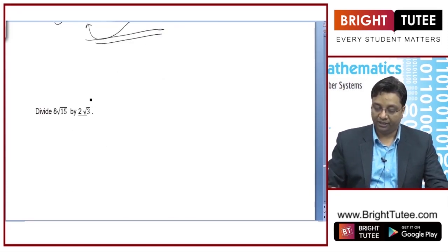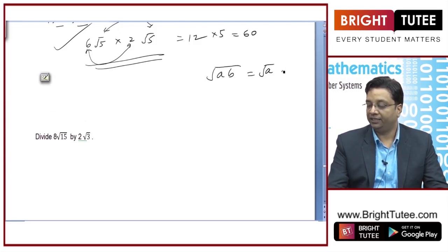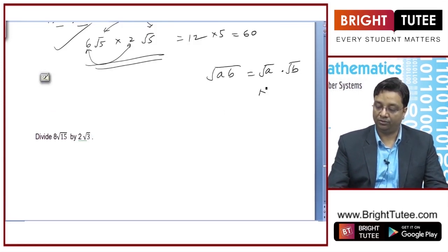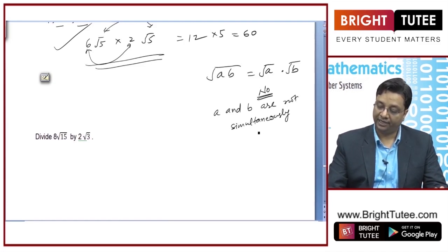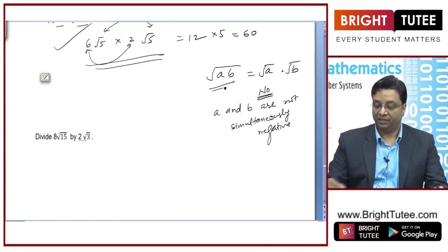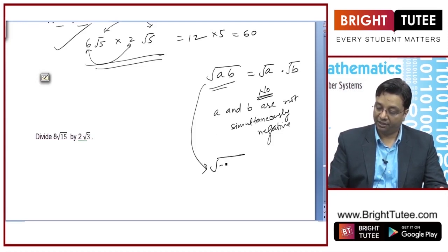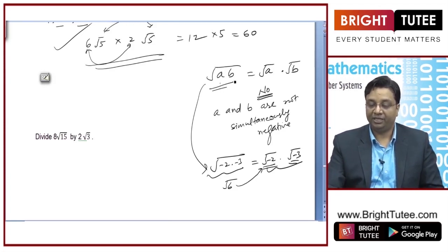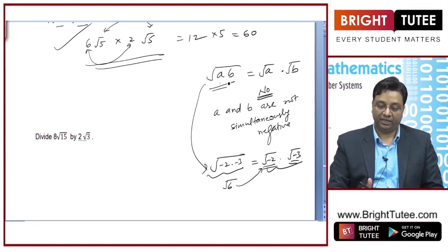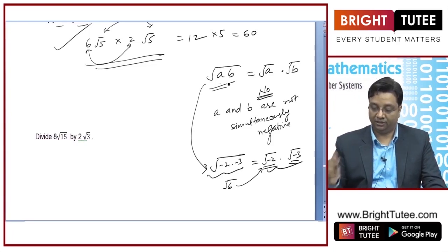I would like to highlight one more point. It is written that √(AB) = √A × √B. Is it always true? No. It is true only when A and B are not simultaneously negative. Because if both A and B are negative, on the left-hand side you have a real number like √((-2)×(-3)) = √6, but on the right-hand side you have √(-2) × √(-3), which are not real numbers. So it cannot be broken into those two parts unless we know A and B are not simultaneously negative.